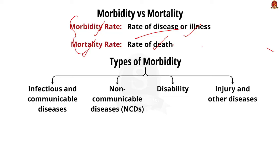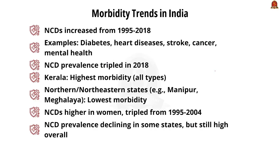Morbidities can be divided into four types: firstly, infectious and communicable diseases; secondly, non-communicable diseases; thirdly, disability; and fourthly, injury and other diseases. Across India, non-communicable diseases have increased from 1995 to 2018, showing a rise in NCD rates.